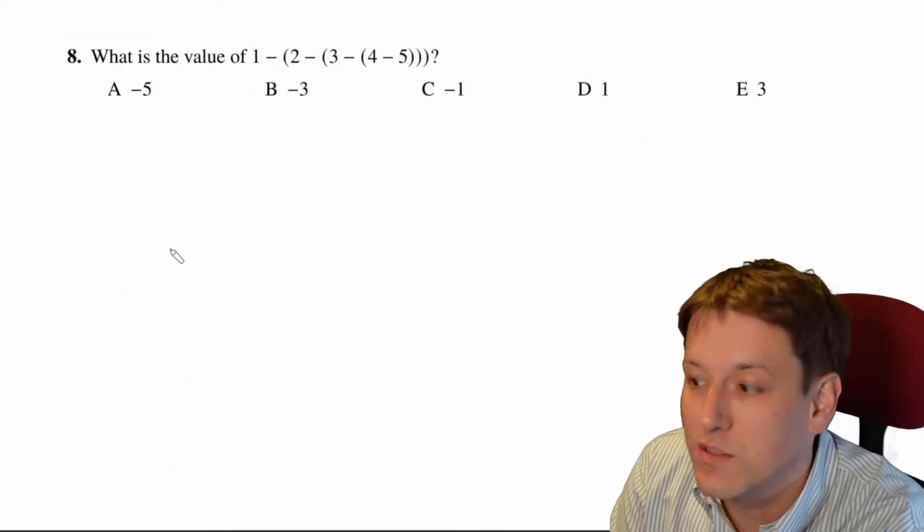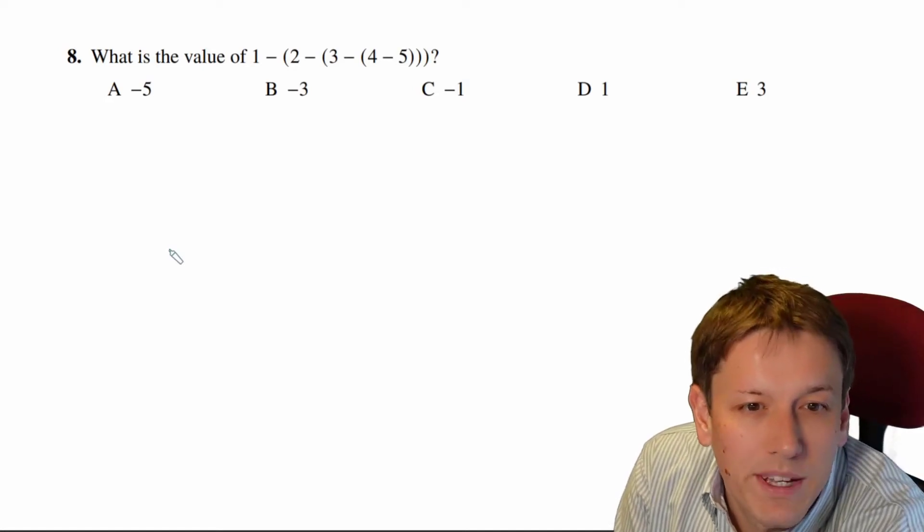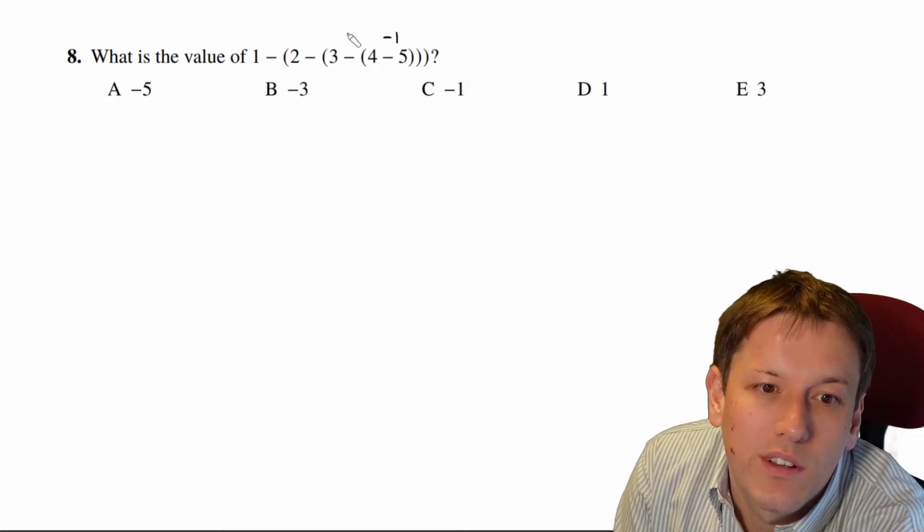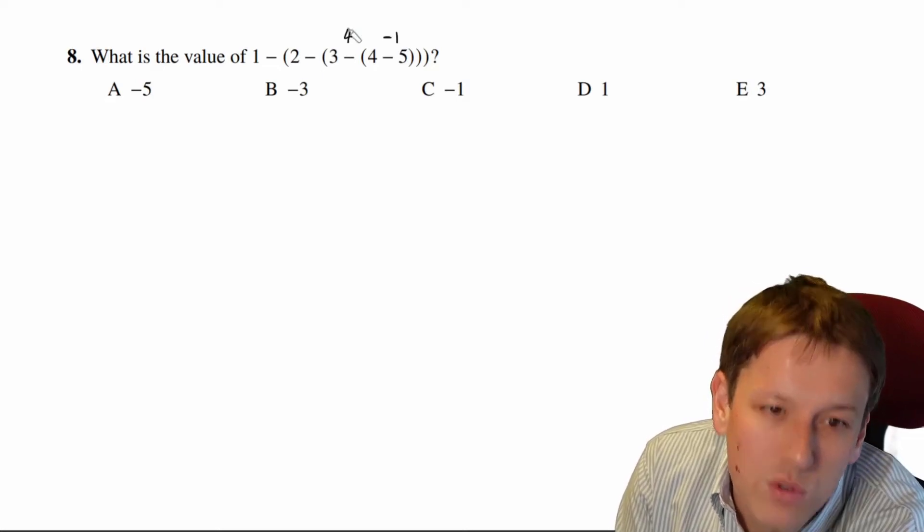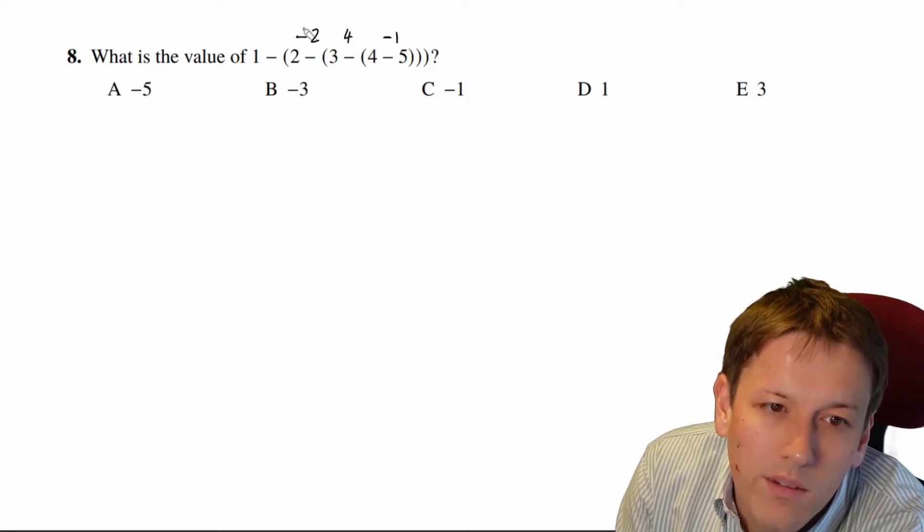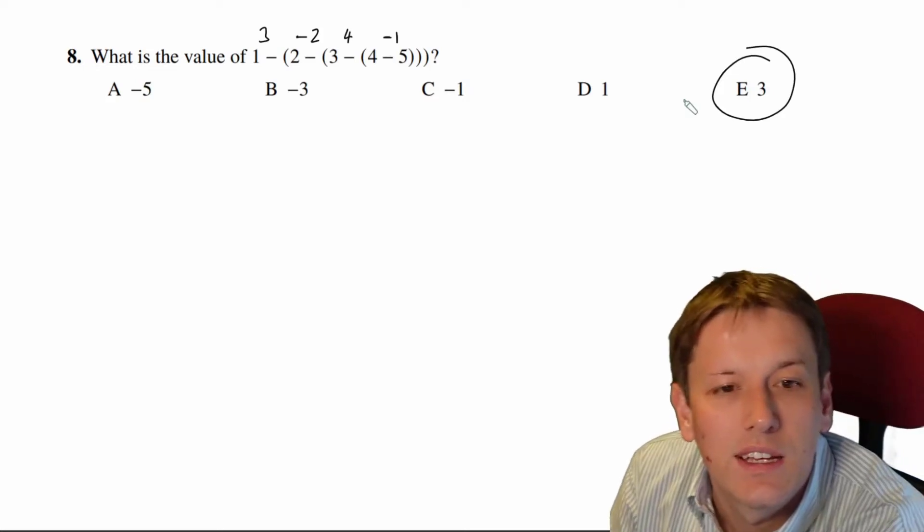In question 8 here, we've just got to make sure we do everything in the right order. So I start with the inside bracket: 4 minus 5 will give me minus 1. Then I do 3 minus minus 1 to give me plus 4. Then I do 2 minus what I've got here, which is, so 2 minus 4 is minus 2. And then 1 minus minus 2 gives me a final answer here of 3, and the answer is E.